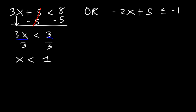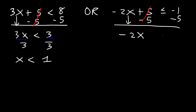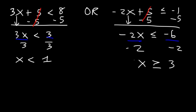Now for the right side, subtract both sides by 5. We get negative 2x is less than or equal to negative 1 minus 5, which is negative 6. Next, divide both sides by negative 2 — the number in front of x. Keep in mind that whenever you multiply or divide by a negative number, you need to change the direction of the inequality. Negative 6 divided by negative 2 is 3, so x is greater than or equal to 3.